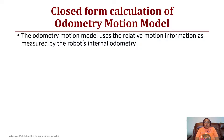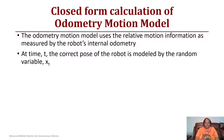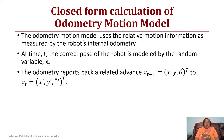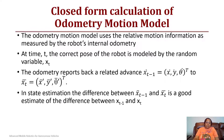To come up with a closed-form calculation for the odometry motion model, it uses relative motion information as measured by the robot's internal odometry. At time t, the correct pose of the robot is modeled by the random variable x sub t, and the odometry reports a related advance from x-bar t-minus-one (x-bar, y-bar, theta-bar) to x-bar t (x-bar, y-bar, theta-bar). In state estimation, we want to find the difference between x-bar t-minus-one and x-bar t and see if it's a good estimate of the actual movement from x t-minus-one to x t.